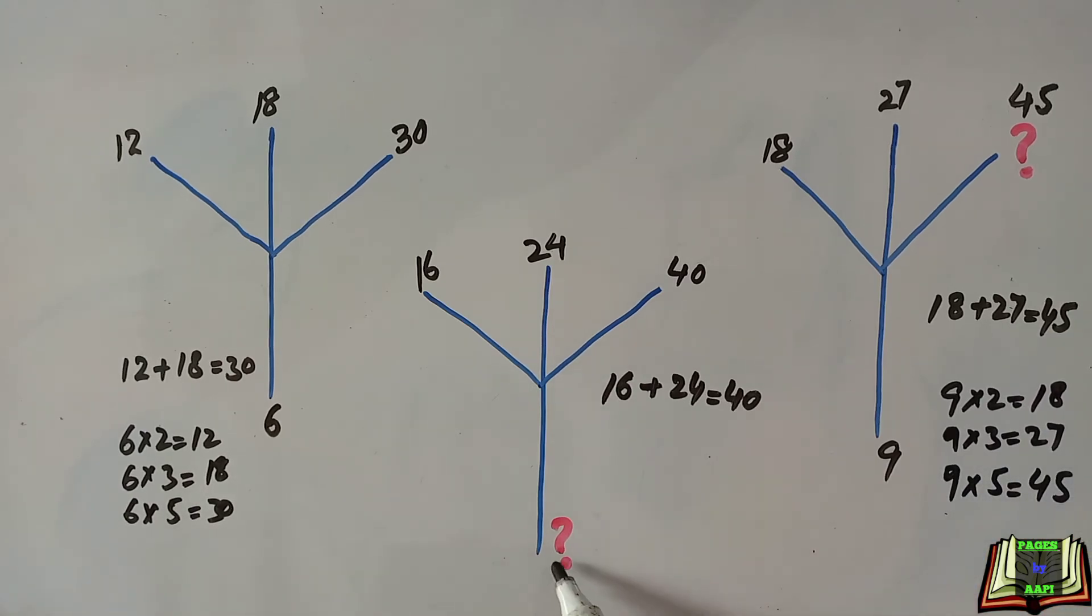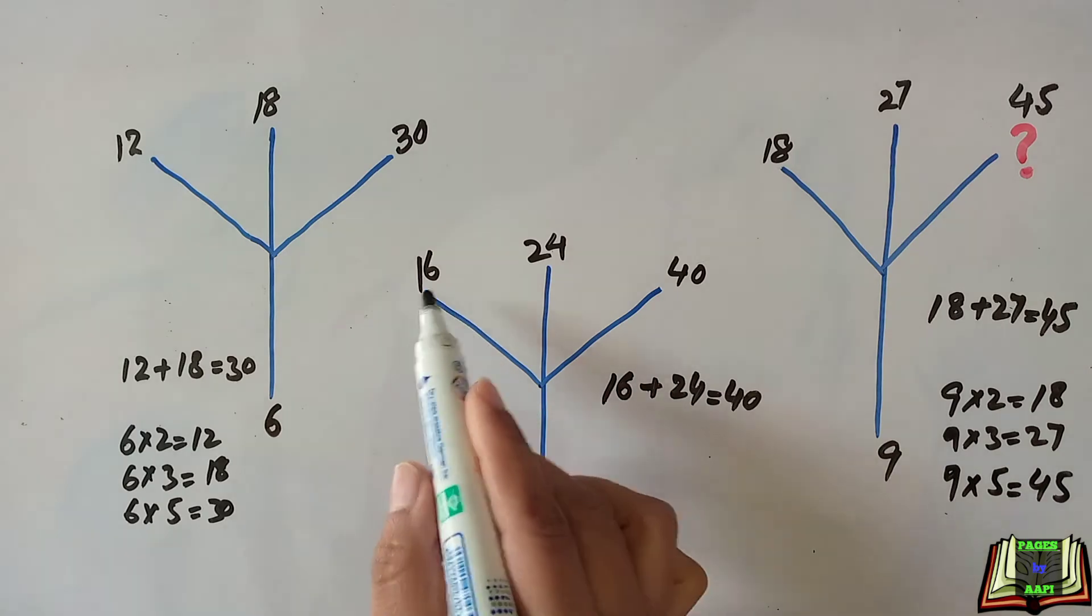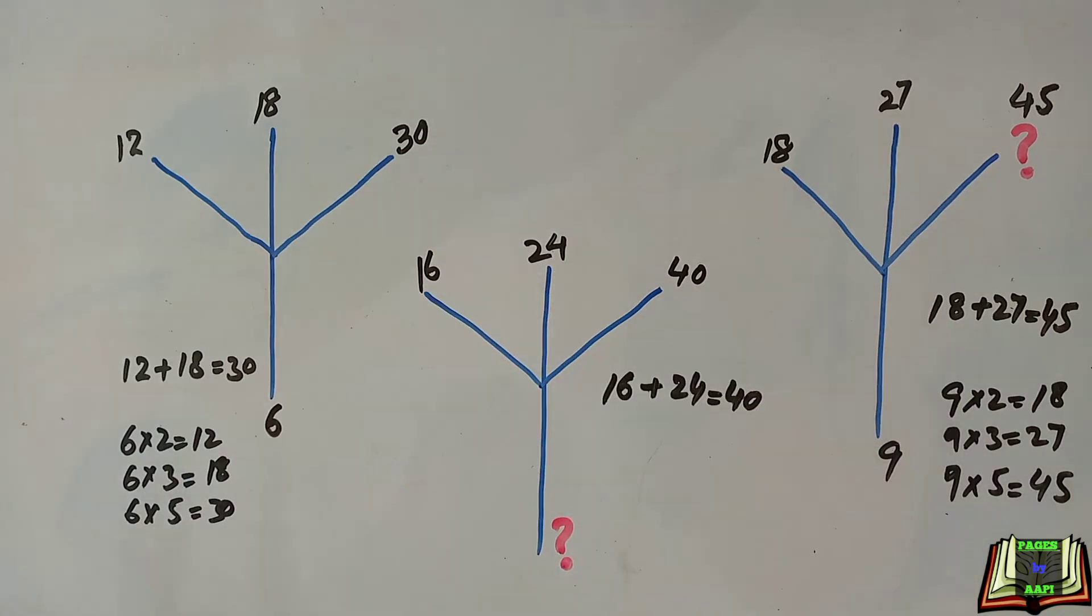Now you are able to guess which number will replace the question mark. These are the multiples of number eight. Eight twos are 16, eight threes are 24, and eight fives are 40. So here comes number eight which will replace the question mark.